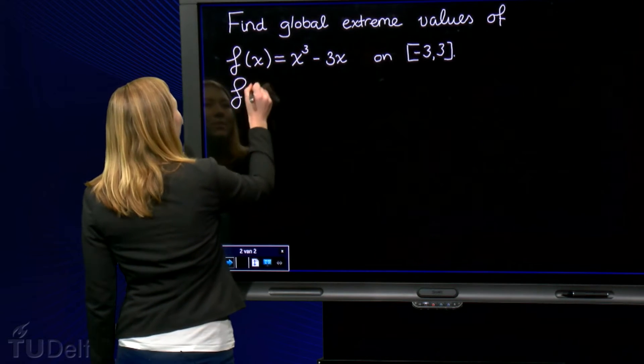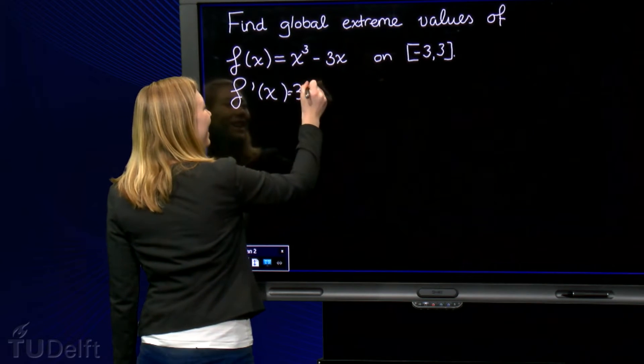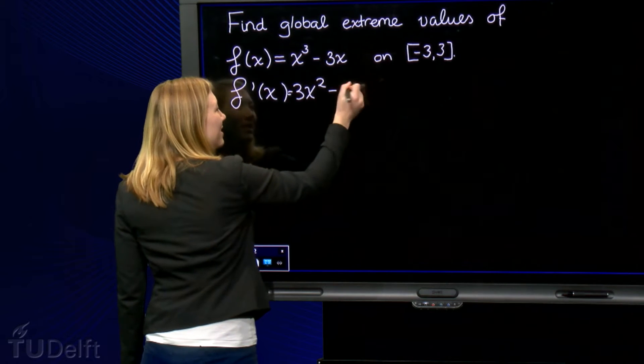Let us first determine the derivative of f. The derivative becomes 3 times x squared minus 3.